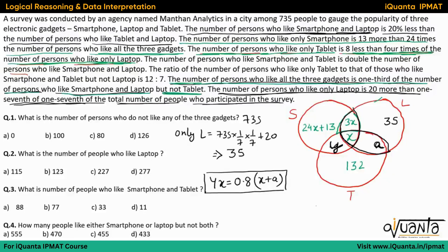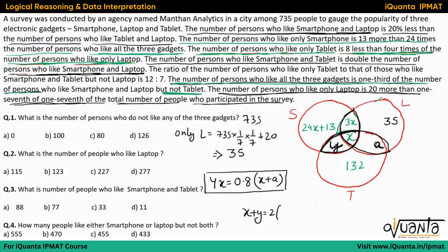The statement says the number of persons who like smartphone and tablet is double the number of persons who like smartphone and laptop. Smartphone and tablet is the region x + y, and smartphone and laptop is 4x. So x + y = 2(4x) = 8x, which gives us y = 7x.